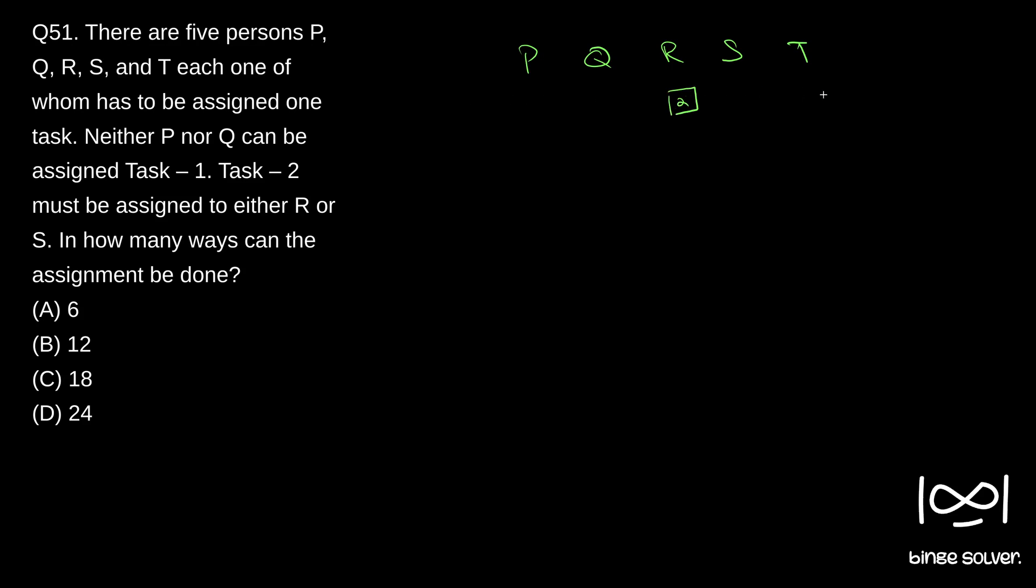Now we will see what are the possible ways we can assign the rest of the tasks to P, Q, S, and T. We will do the assignment in succession. So P can have how many? There are four tasks left, which is 1, 3, 4, and 5. These are the tasks that are left, and task 1 cannot be assigned to P, so only three possible combinations which is 3, 4, 5 are the possible combinations P can take.